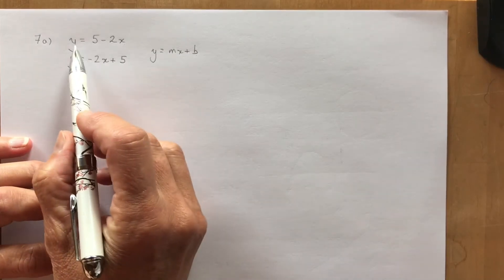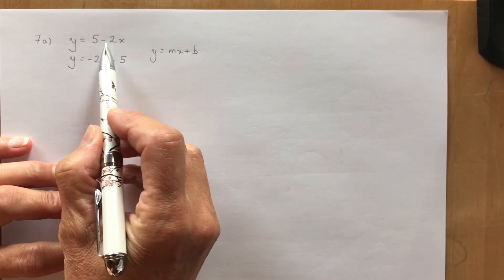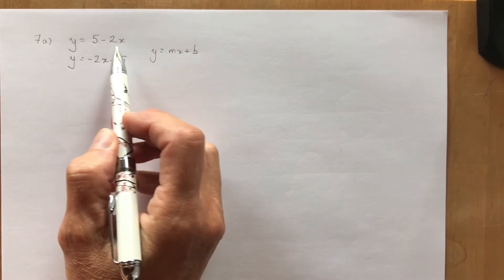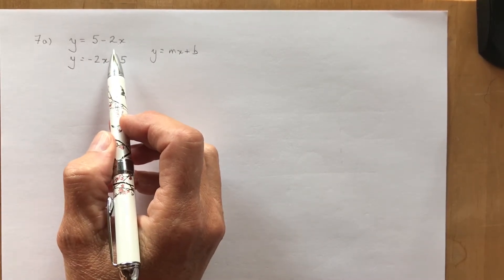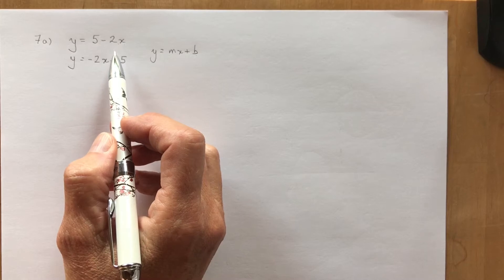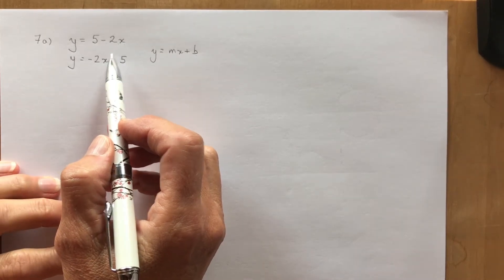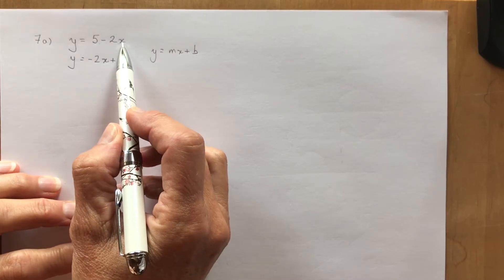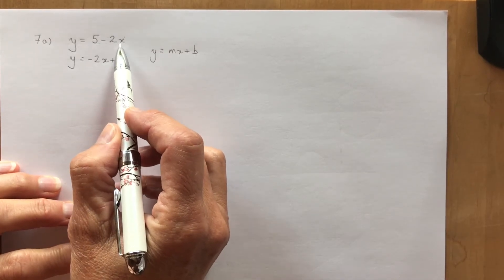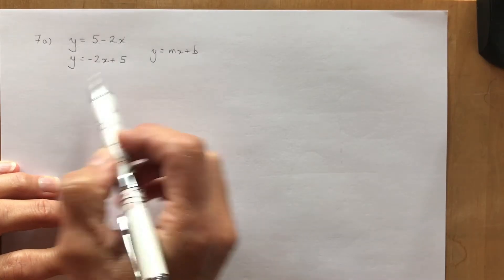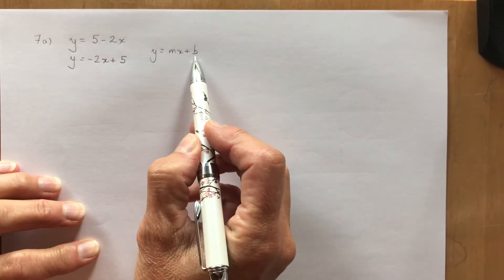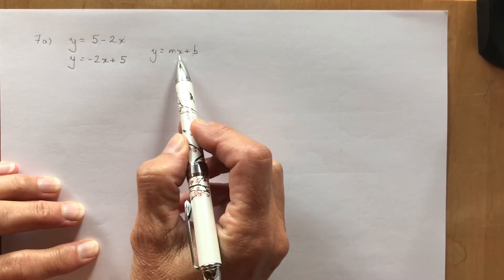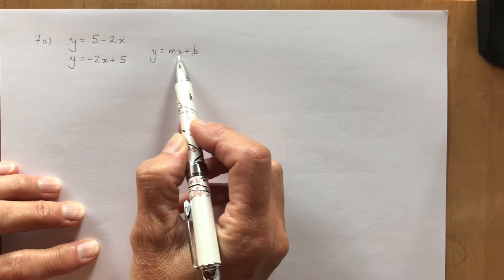So the first equation is y equals 5 minus 2x. When you look at that equation you're probably going to say well I don't even know what it looks like, I'm going to have to make a table of values. Well you could, but it's not necessary because you should be able to recognize first of all that it is linear because the degree of the x value is 1.